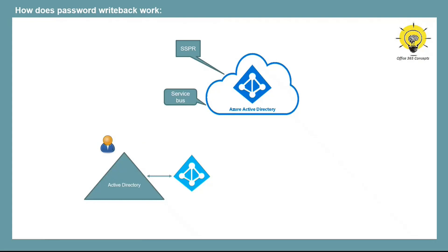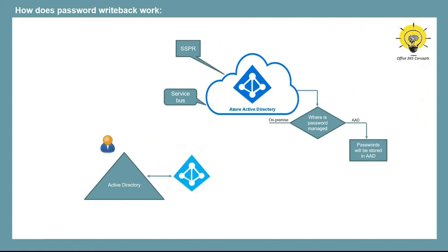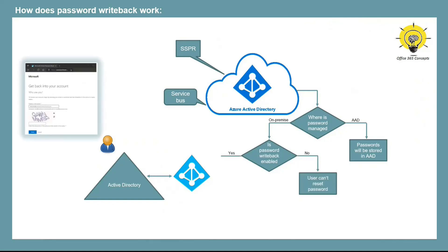When a synchronized user tries to reset or change their password using the self-service password reset portal, a check is performed to determine where the password is managed — in Azure Active Directory or in on-premise Active Directory. If the password is managed in Azure AD, it is stored in the Azure AD database. If managed on-premise, a check is performed to see if password writeback is enabled for the tenant and if the password writeback service is up and running. If not, the user receives an error.